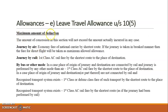The amount of concession will not exceed the amount actually incurred in any case. For journey by air, the maximum is the economy fare of the national carrier by the shortest route. In India, the national carrier is Air India. So wherever you travel, the economy fare charged by the national carrier by the shortest route is the maximum deduction allowed — not what you actually paid. Whether the journey is broken or a direct flight, the maximum deduction remains the economy fare of the national carrier by shortest route.